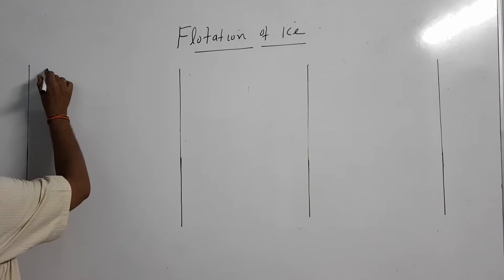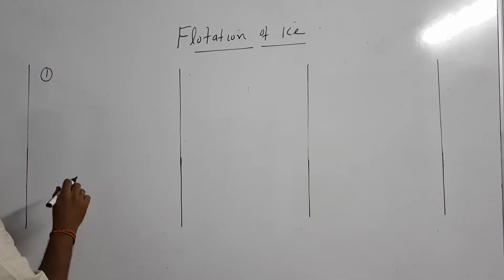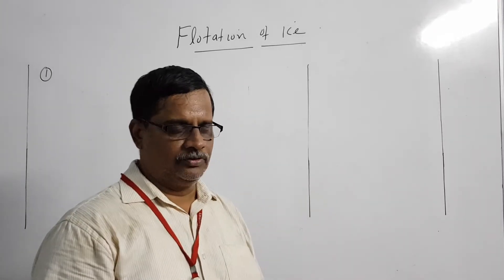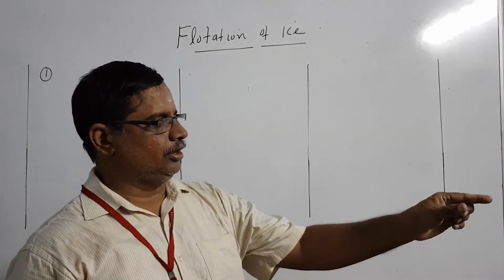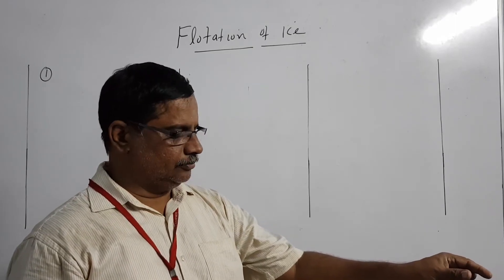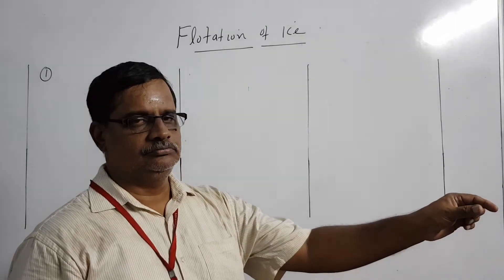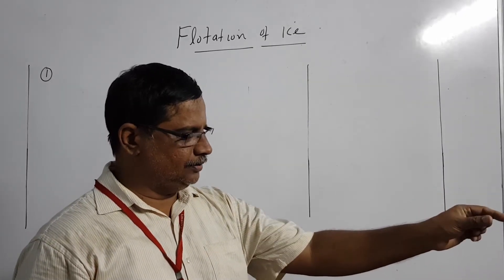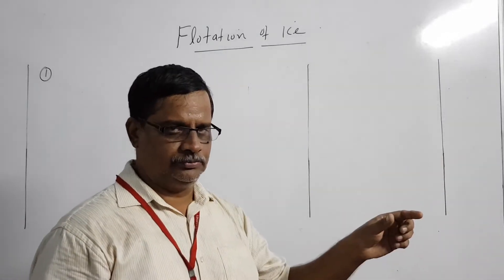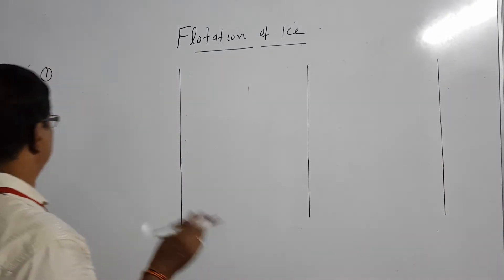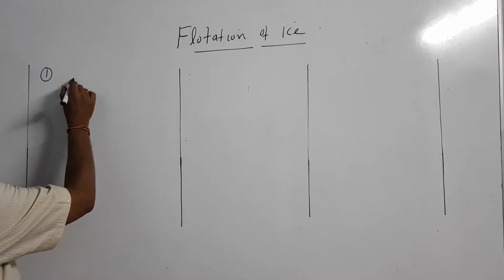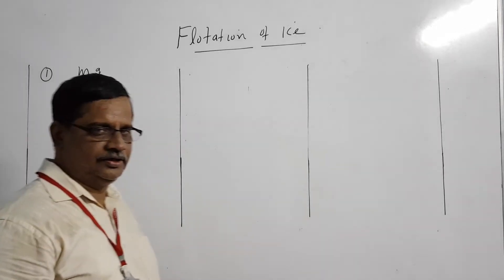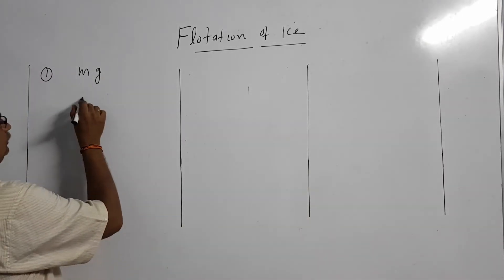In the first case, we have an ice block of mass M floating on the surface of pure water in a jar. When we put the ice block in water, the level will rise by a few centimetres. Now we will see what happens to the water level once the ice block melts. According to the first law of flotation, the mass of water displaced by the ice block is also M.